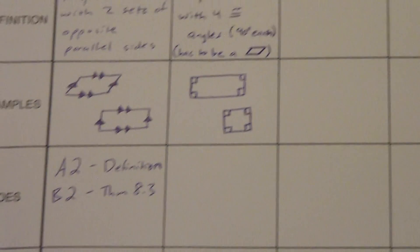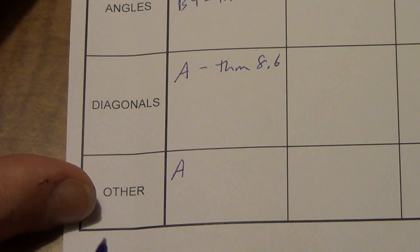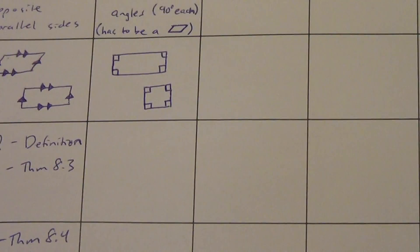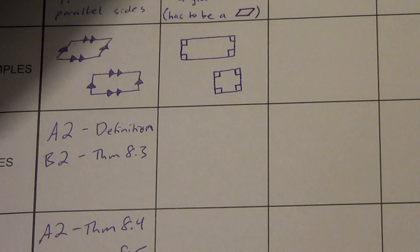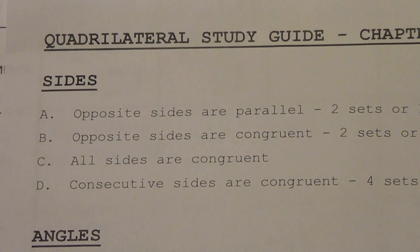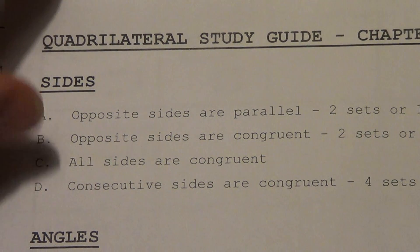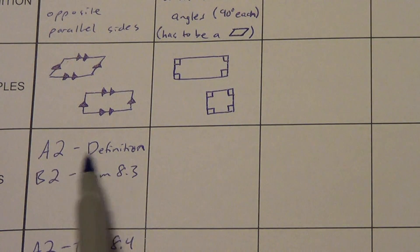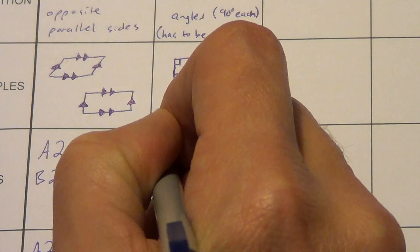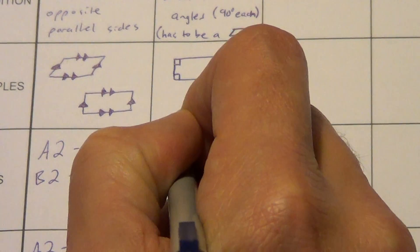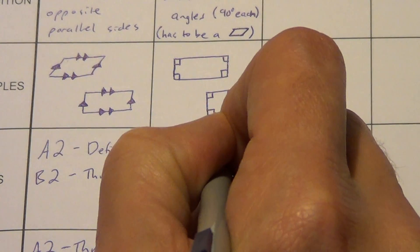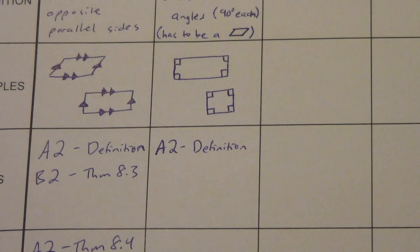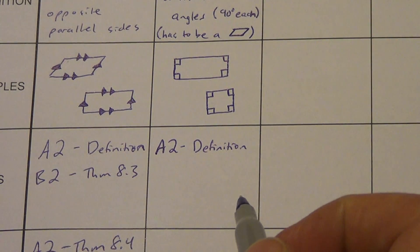Let's look at sides, angles, diagonals, and others. For sides: opposite sides are parallel — yes, that's true. We said it has to be a parallelogram, so if it's a parallelogram, then opposite sides have to be parallel. That comes from the definition of a parallelogram, not necessarily the definition of a rectangle, but because a rectangle is a parallelogram, it applies. Next, opposite sides are congruent — also true. That's because of theorem 8.3: in a parallelogram, opposite sides have to be congruent, both sets.